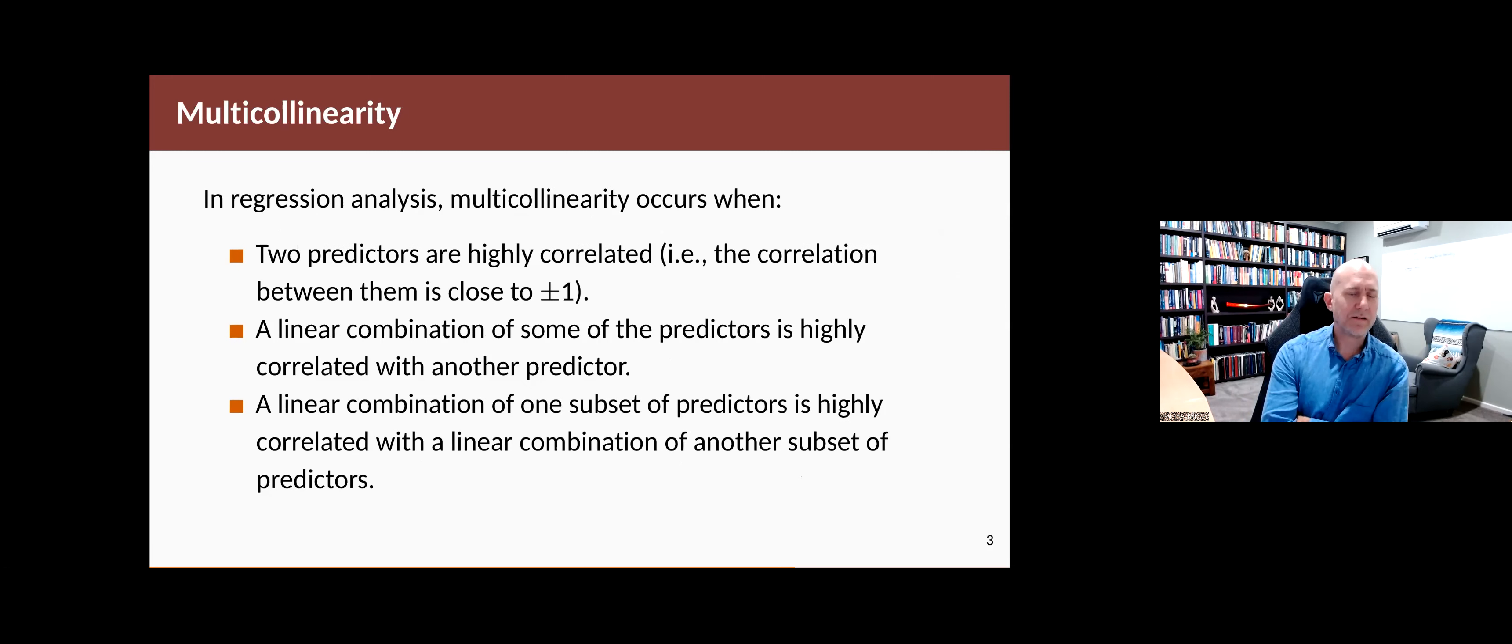The second issue that sometimes gets talked about in regression is multicollinearity. That will occur when you've got two predictors that are quite strongly related to each other. So the correlation between your two predictors is going to be close to plus or minus one. It can also happen when you get a combination of some of the predictors as highly related to another predictor.